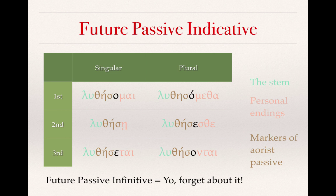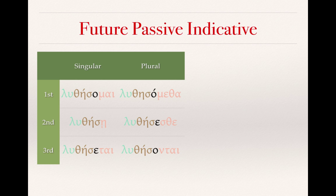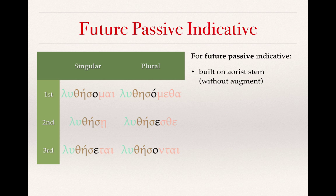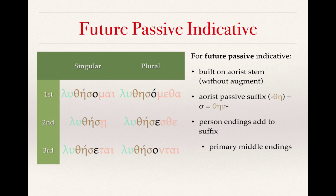With the forms of the future passive indicative, let's make a few notes. You can see that it is built on the aorist stem — we've dropped the augment, but the theta-eta is present. We have added a sigma to that theta-eta of the aorist passive suffix. So the key markers for the future passive are that theta-eta-sigma, onto which we have added the primary middle personal endings. The theta-eta distinguishes the future passive from the future middle, which we learned in an earlier lesson.